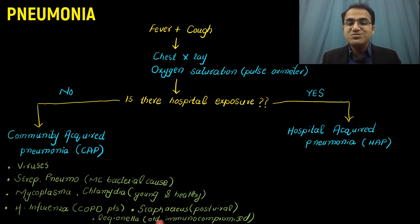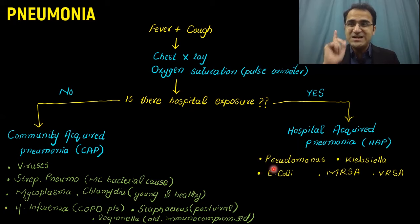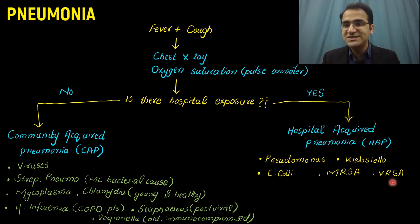Old and immunocompromised patients are affected by Legionella, which causes pneumonia in those who are elderly or immunocompromised. Hospital-acquired pneumonia is caused by resistant bacteria: Pseudomonas, E. coli, MRSA (methicillin-resistant Staph aureus), vancomycin-resistant Staph aureus, and Klebsiella. These are all resistant organisms, which is why the history of hospital exposure is so important.